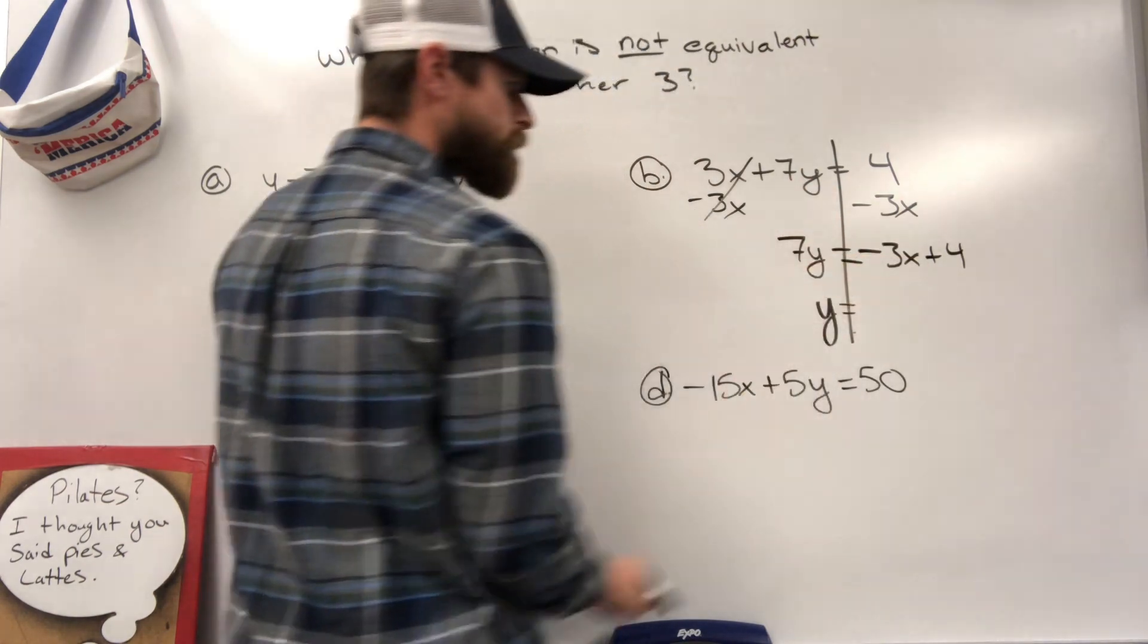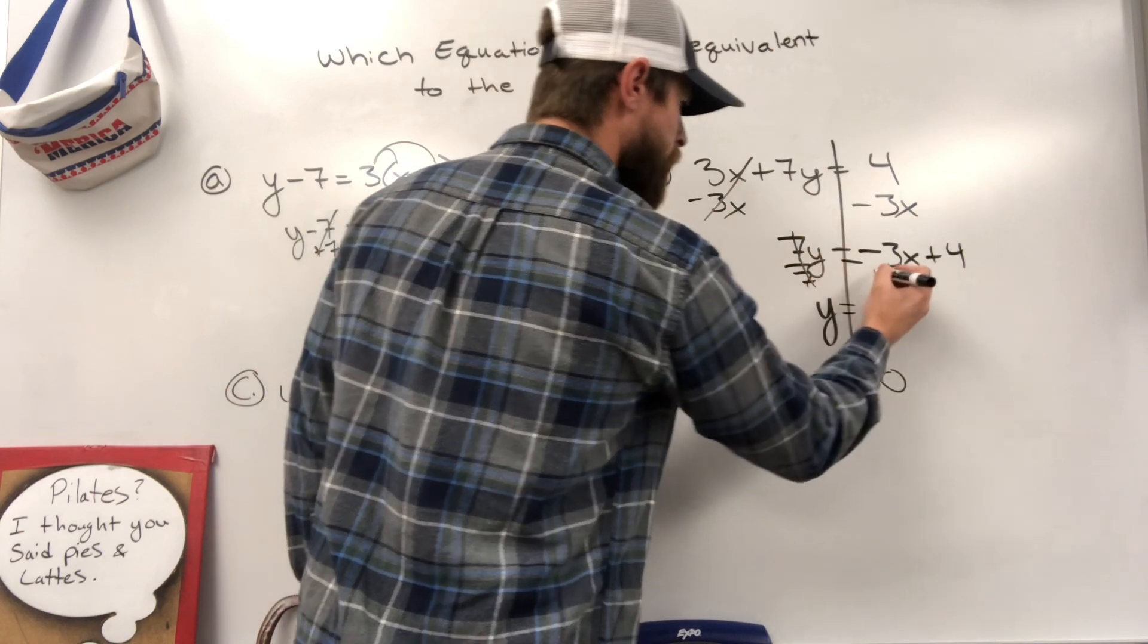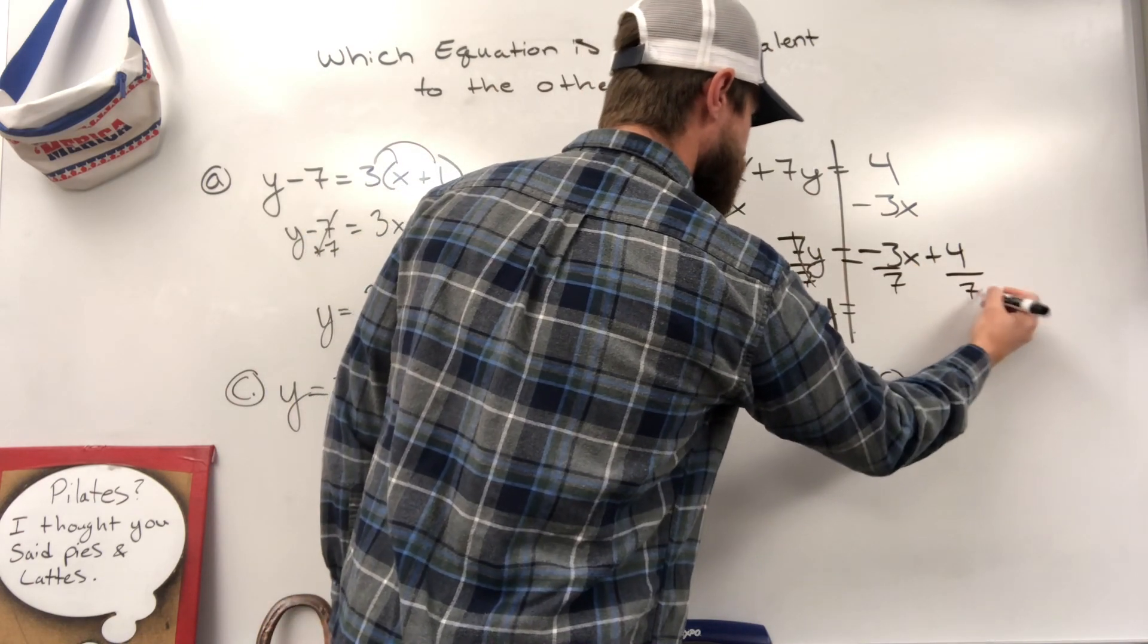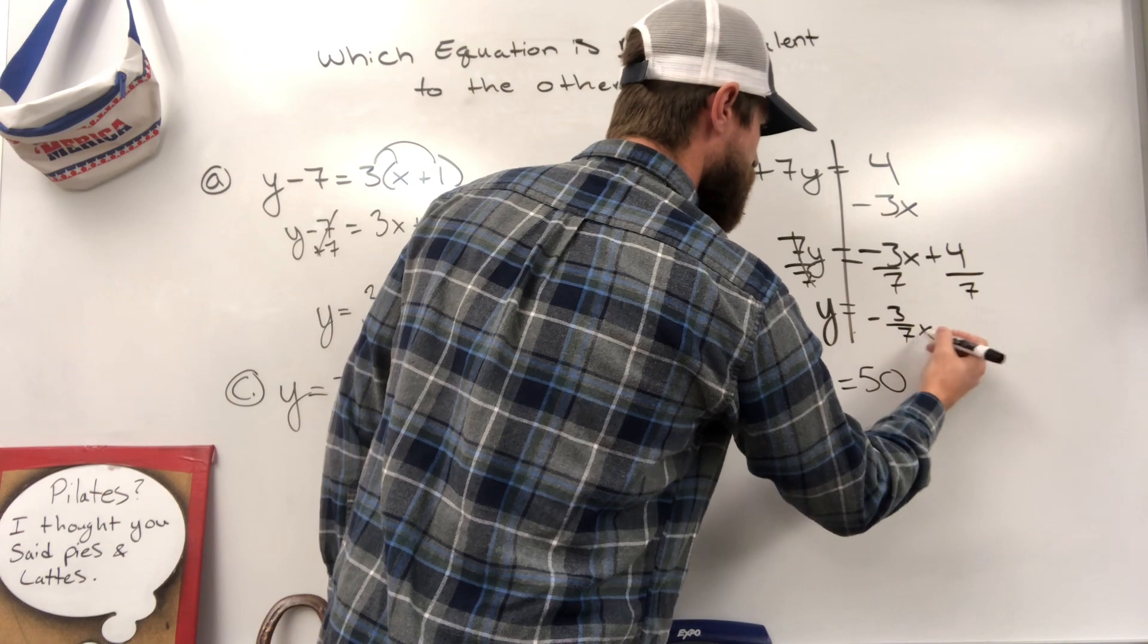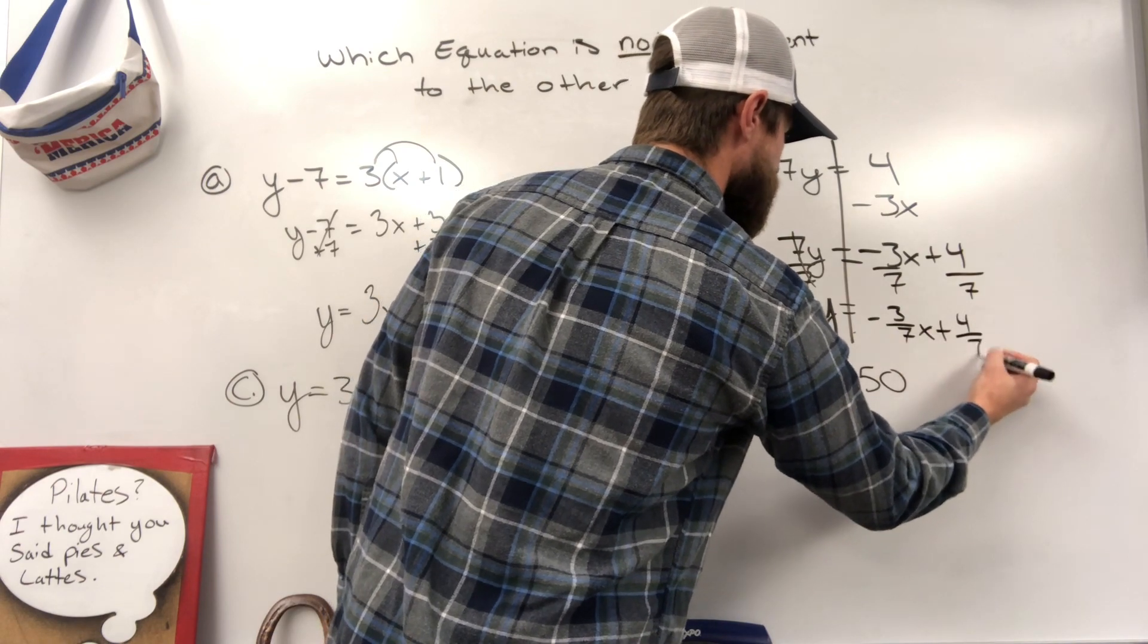Bring 7y down, divide by 7, divide by 7, divide by 7, you get negative 3/7 x plus 4/7.